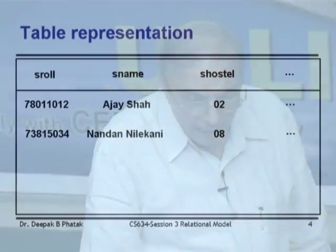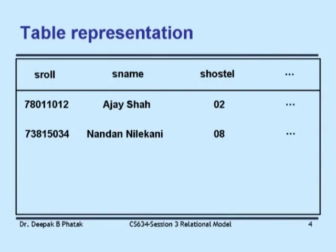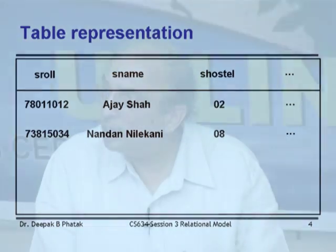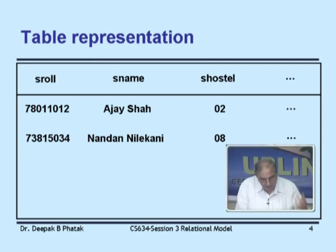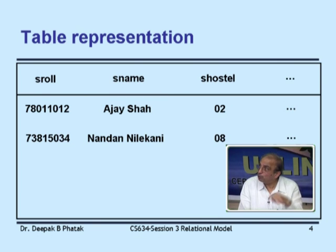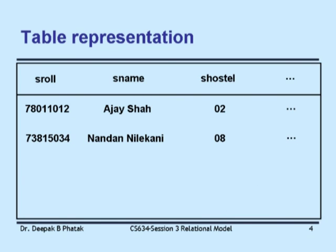Each row represents values for one student: roll number, name, hostel number, etc. There are as many rows as there are students in the actual database or file. This table can be represented physically as a register, a file, or a computer file — sequential, indexed, or otherwise. Similarly, a course entity has a primary key (course code), course name, and credits.